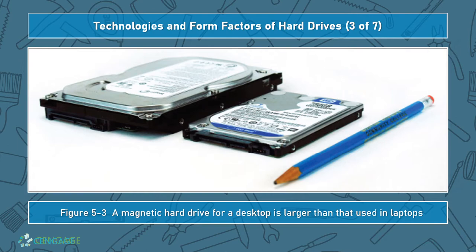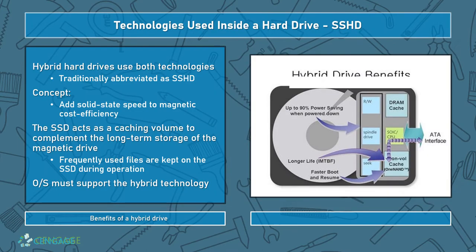There are also combinations — what we call a solid-state hybrid drive. This combines the technology that allows solid-state to achieve very efficient speed, as well as efficient cost and long-term storage of a magnetic disk. Solid-state acts as a caching volume, using temporarily stored files that are constantly accessed. Just like transferring information from the hard drive to RAM is a temporary form of volatile storage, we do the same with the SSD, except the SSD is non-volatile. The operating system has to support the technology, but it has a longer mean time between failures — MTBF — and includes power saving of up to 90% when the main magnetic disk spin is powered down, since the solid-state drive does not require constant spinning to retrieve information.